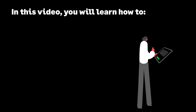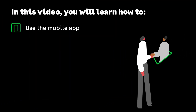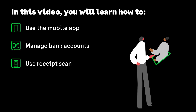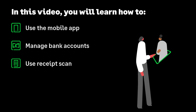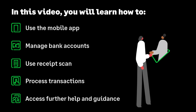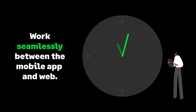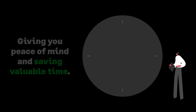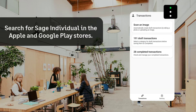In this video, we'll teach you how to use the mobile app. You'll learn how to add and view bank accounts, scan or upload images to create transactions using receipt scan, process draft transactions, enter transactions manually, and access further help and guidance. Changes you make on your mobile device are automatically updated in the web application.